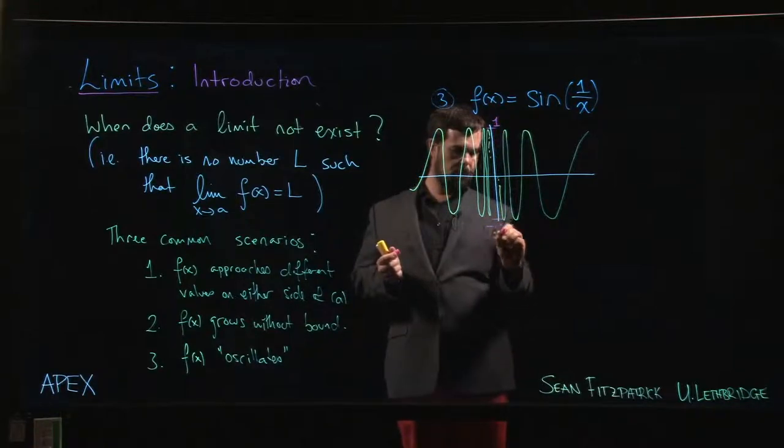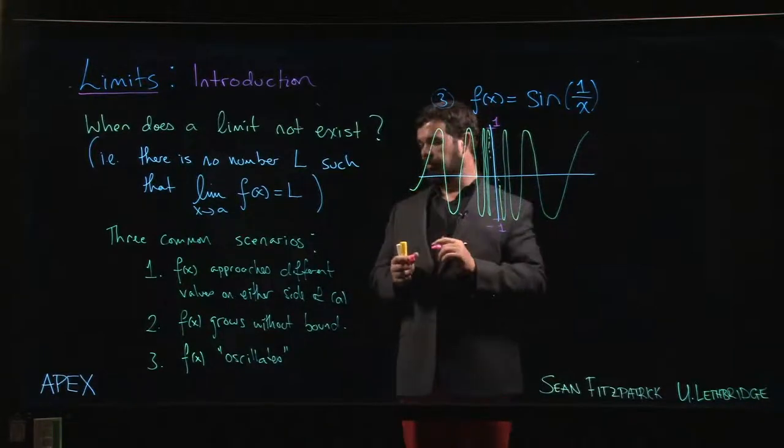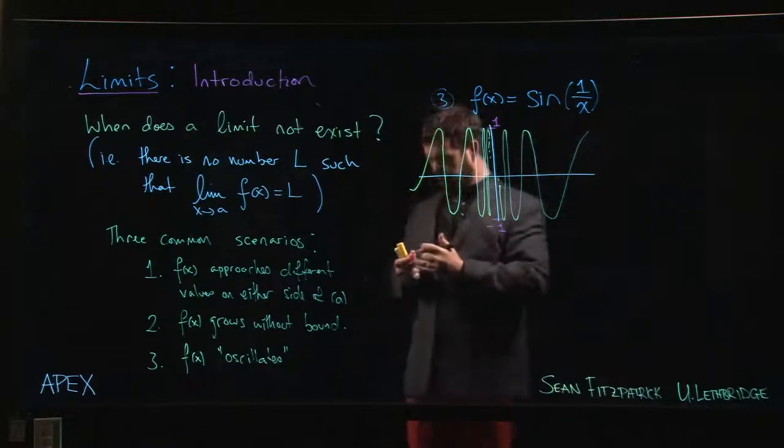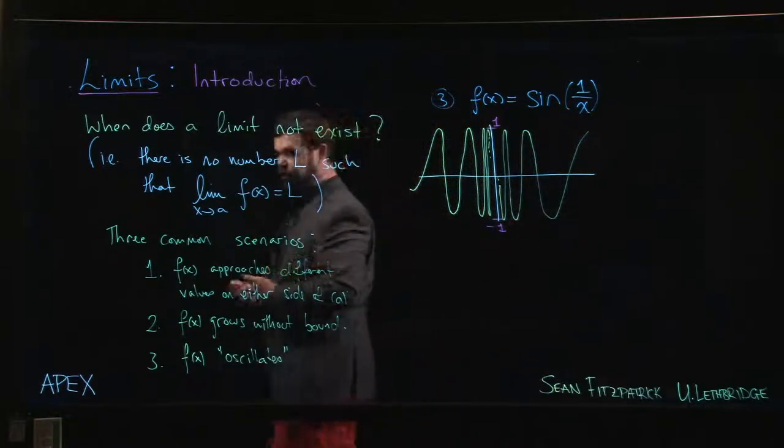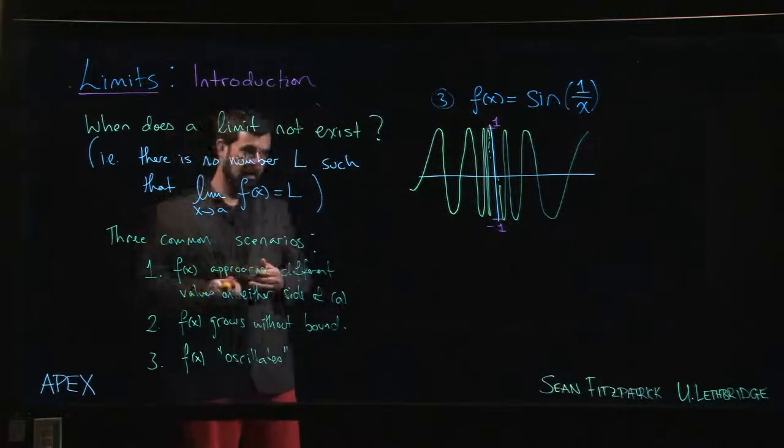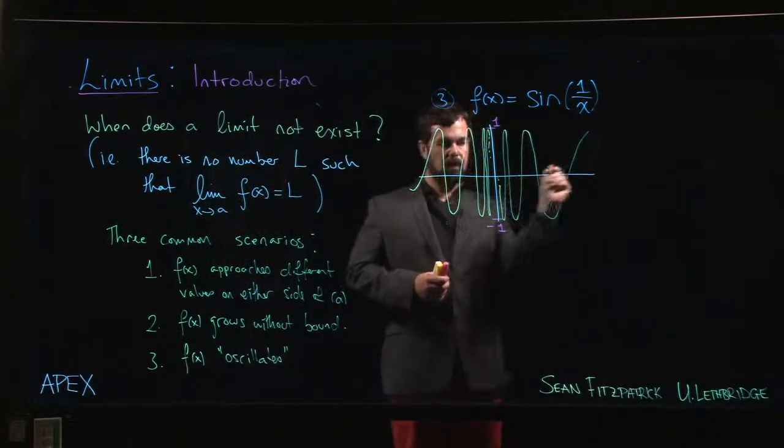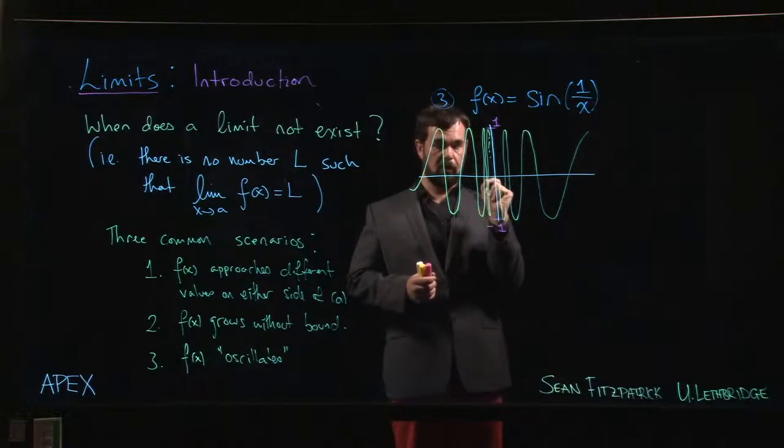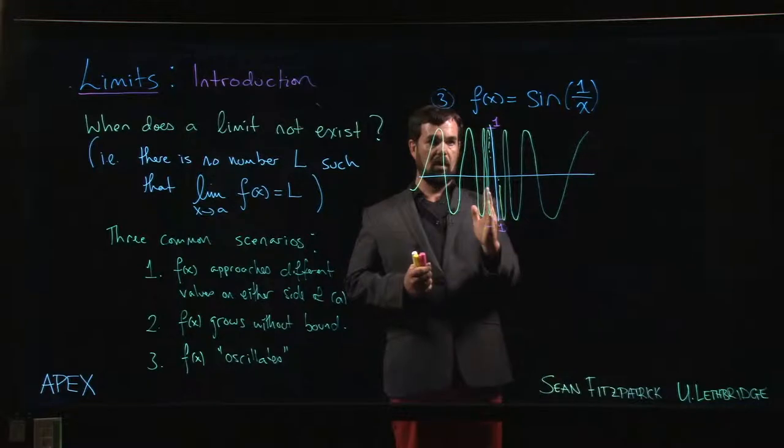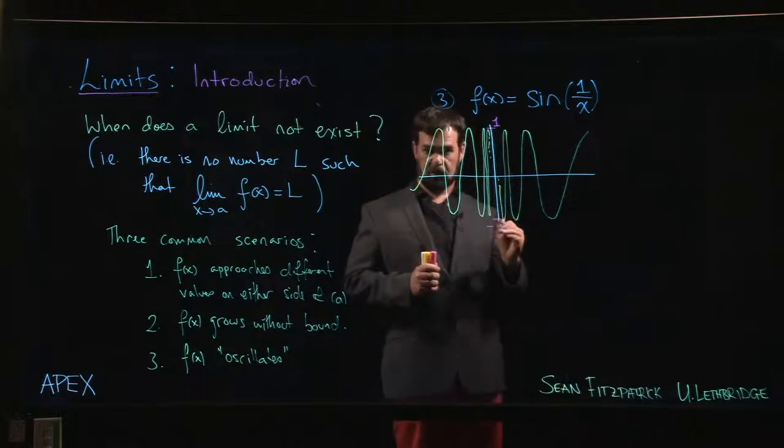In fact, it's mentioned in the textbook that in any interval around zero, this function will attain every single value between minus one and one. In particular, no matter how close you choose your x value to zero, you can always find an even smaller x value where f of x equals minus one, and a smaller still value where f of x equals plus one.